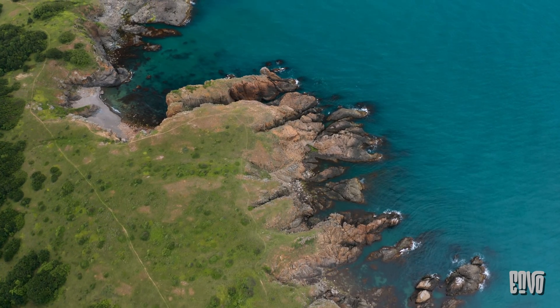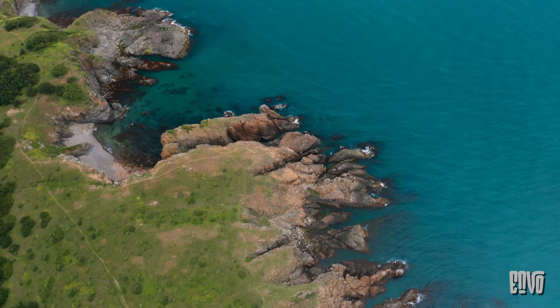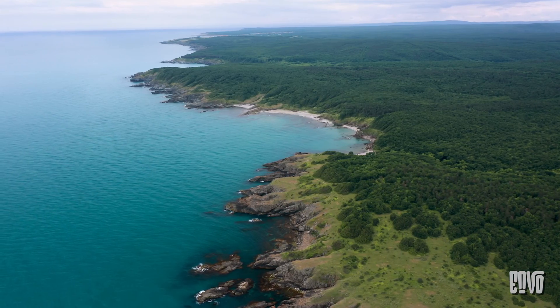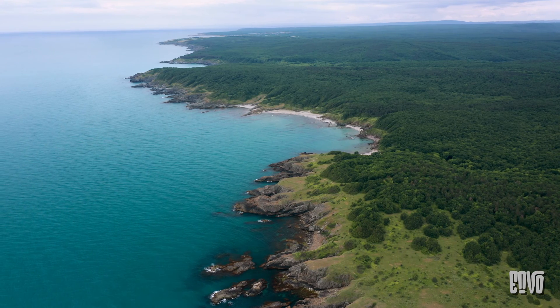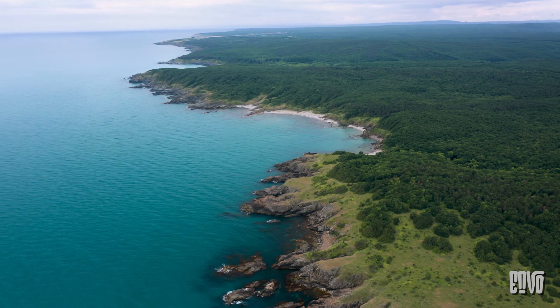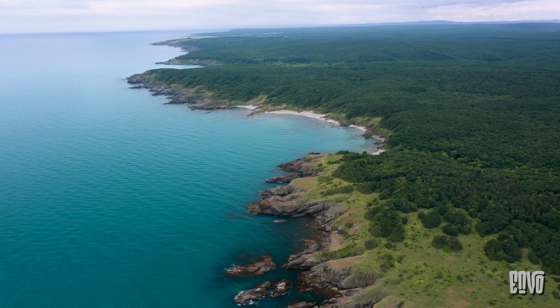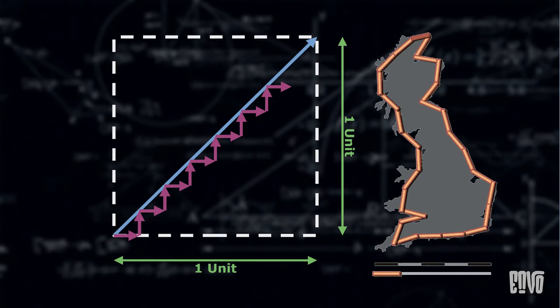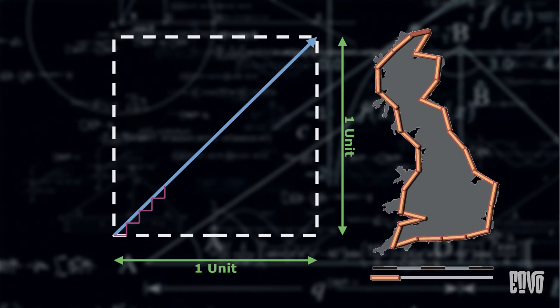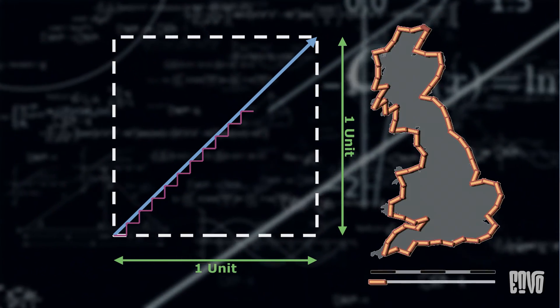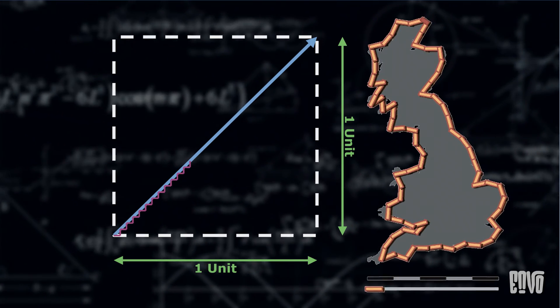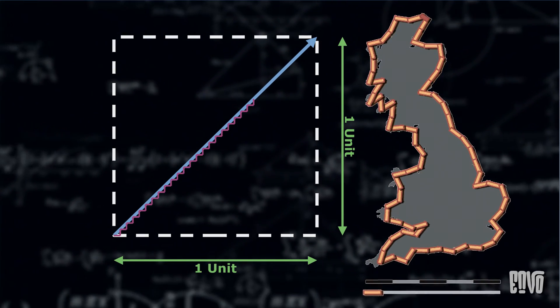This is because coastlines are often fractals, exhibiting self-similarity at different scales. They have a fractal dimension greater than their topological dimension, which is one for a line. The core similarity to the staircase paradox is the idea that increasing resolution doesn't lead to convergence to a fixed length, but rather an ever-increasing measurement due to persistent complexity at smaller scales. In the staircase paradox, the jaggedness never smooths out in terms of length. In the coastline paradox, the wiggliness never disappears.